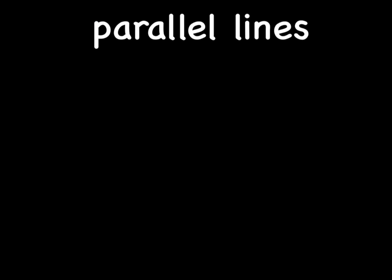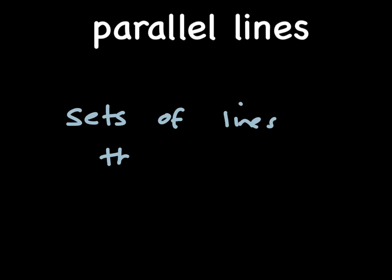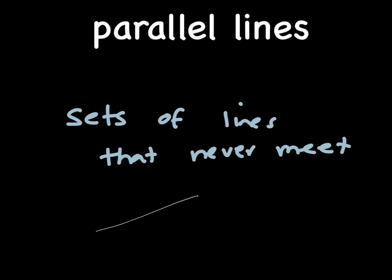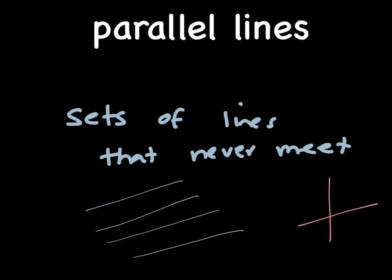The final set of lines we're going to talk about are parallel lines. Parallel lines are sets of lines that never meet. If I draw these lines here, they are parallel lines. These lines are not parallel because they meet.